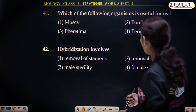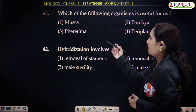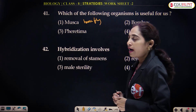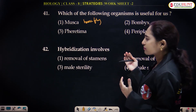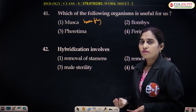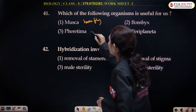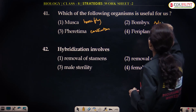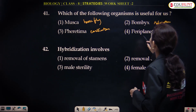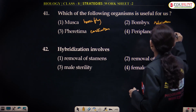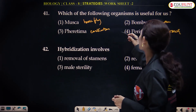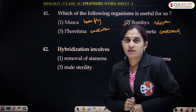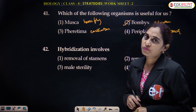Which of the following organisms is useful to us? Musca is a house fly. Ferritima is an earthworm. Bombyx is a silkworm. Periplaneta is a cockroach. Among these, the silkworm is commercially useful to us. Although earthworms are also useful, the silkworm is commercially the most significant.